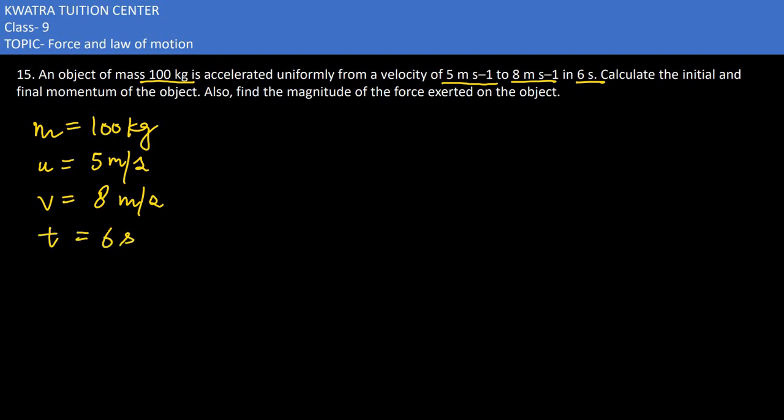And then the time is given as 6 seconds. Now they are saying calculate the initial momentum. Initial momentum will be m into initial velocity, so it is 100 into 5, so it would be 500 kg meter per second.